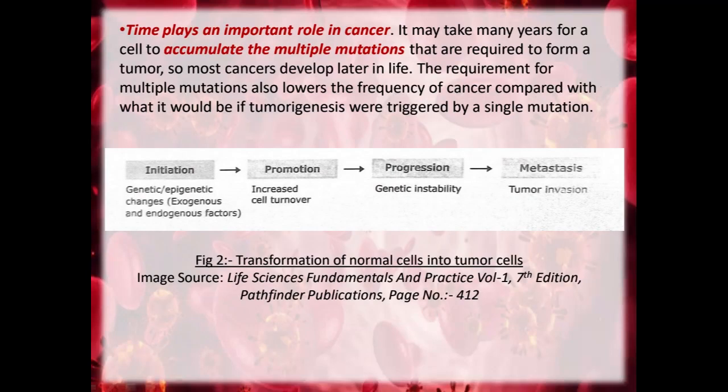Time plays an important role in cancer. It may take many years for a cell to accumulate mutations to form a tumour, so most cancers develop later in life. The requirement for multiple mutations also lowers the frequency of cancer compared with what it would be if tumourogenesis were triggered by a single mutation.